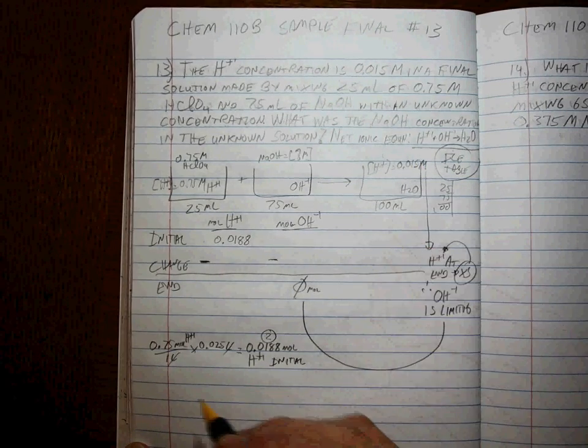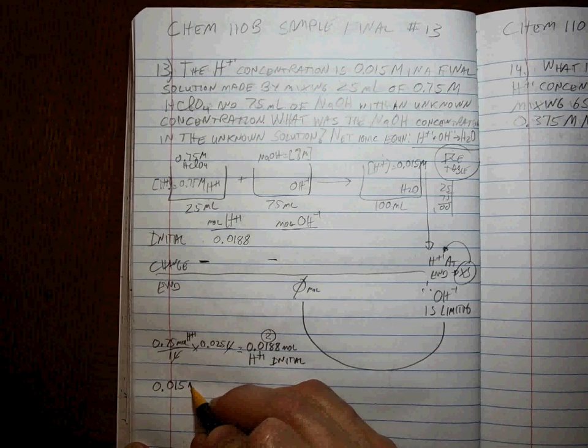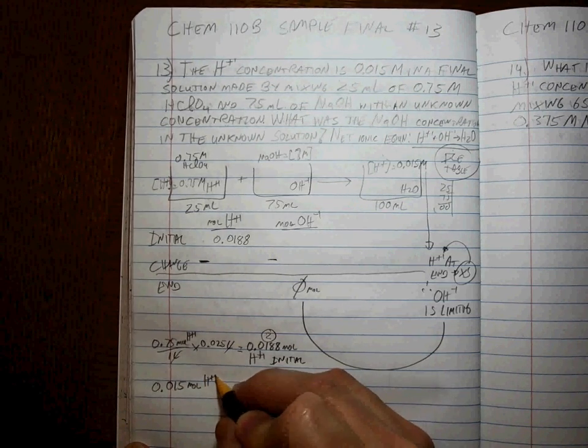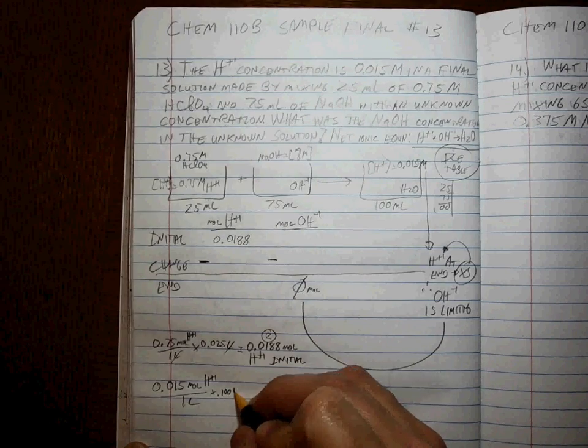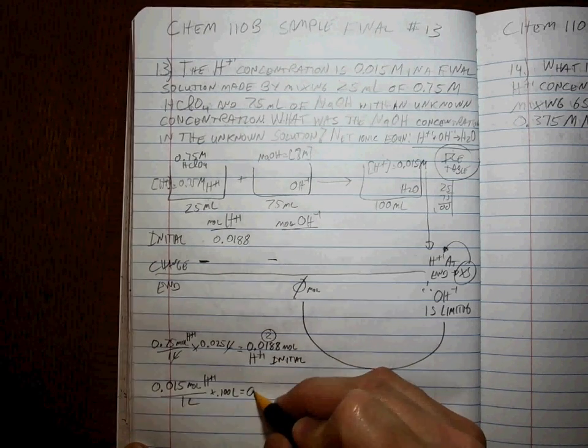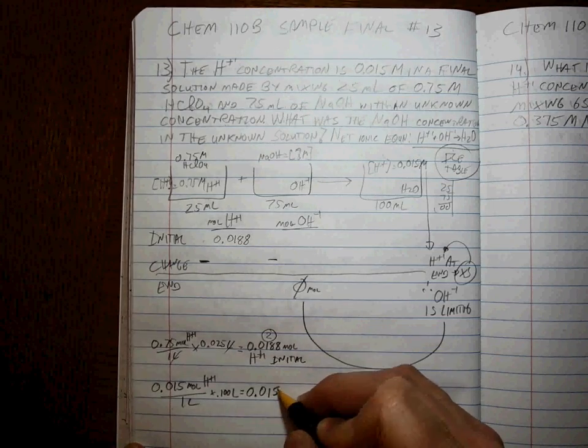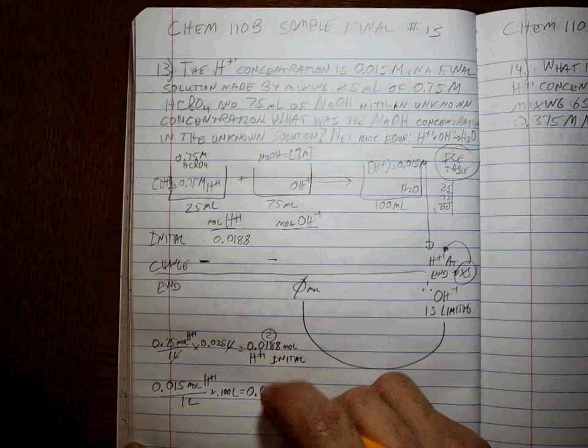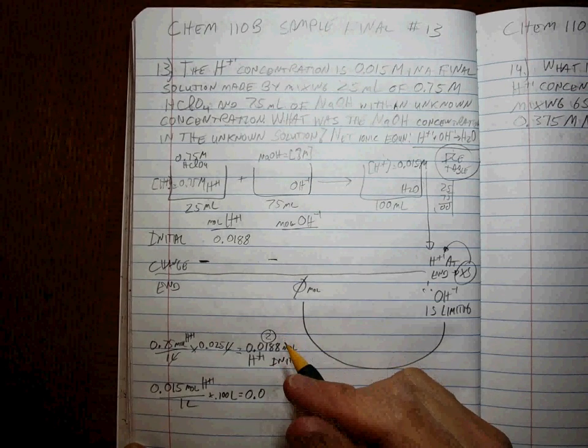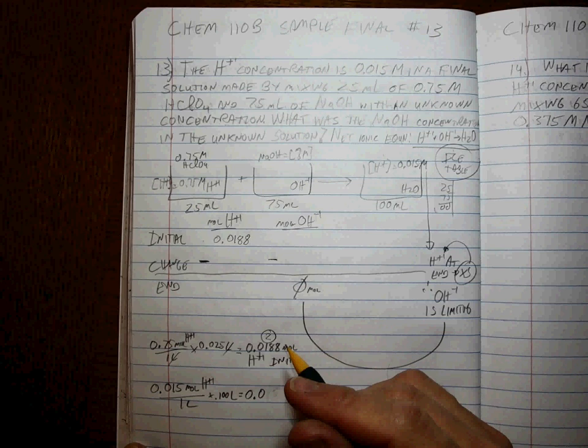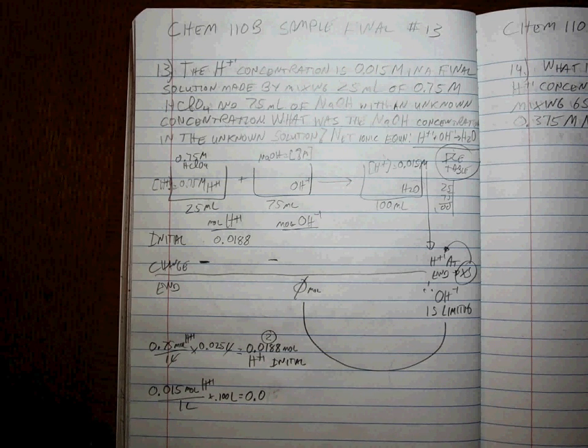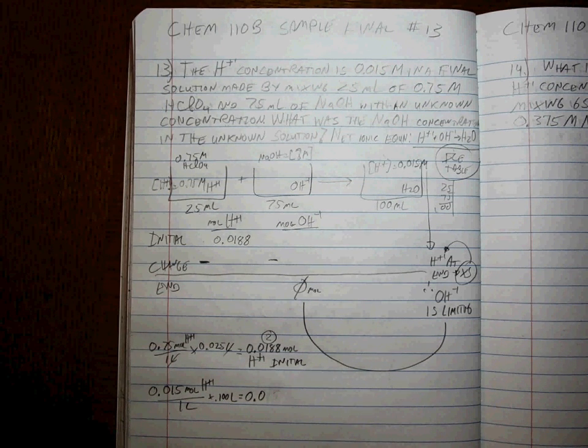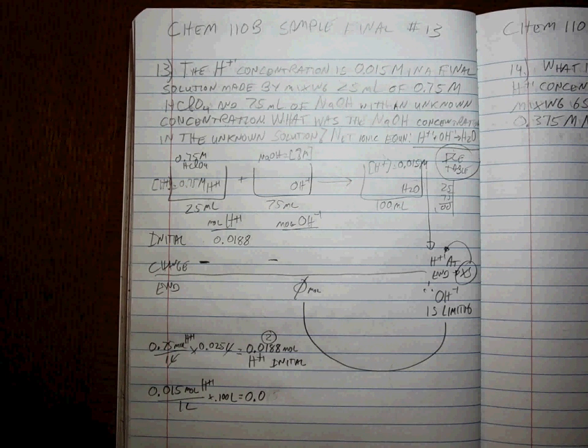And then here we've got a concentration and a volume. So 0.015 moles of H+ per liter times 0.100 liters is 0.0015. This is the moles of H+ at the end because this was the concentration at the end and the volume at the end.